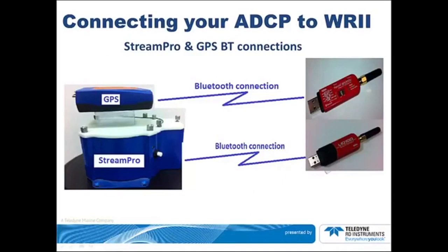The two Bluetooth connections are shown. The one at the bottom is for the ADCP ensemble data and the one at the top is for the GPS data. A separate Bluetooth connection is needed for the GPS to ensure that there is no latency in the GPS data. A SENA SD1000U has been found to work well for all GPS connections. See the Wind River 2 documentation regarding setting the low latency on the SENA adapter. For the ensemble data, any Bluetooth device with ample range will be sufficient.